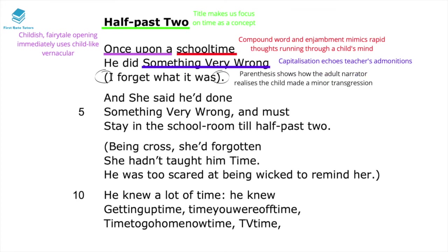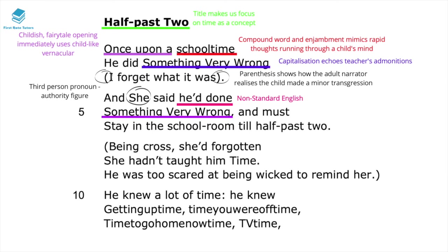The parenthesis in line three reveals that the adult narrator realises the child's transgression was quite minor — a small mistake — but it feels like the biggest deal in the world to the child. The third person pronoun 'she said he'd done' focuses on the teacher as authority figure. The non-standard English echoes the child's thoughts, and the repetition of 'something very wrong' emphasises the child's intense feelings of guilt at receiving detention.